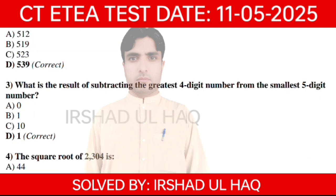Question number 3. What is the result of subtracting the greatest 4-digit number from the smallest 5-digit number? Option number D: 8.